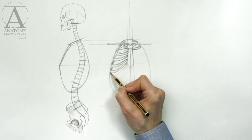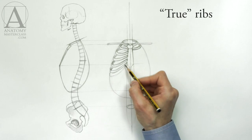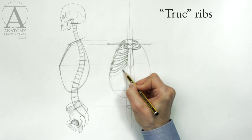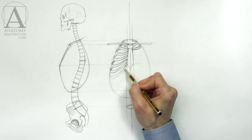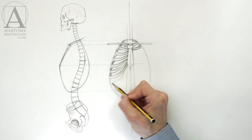The first seven pairs of ribs are called true ribs because they are connected to the breastbone. Every subsequent pair of ribs is wider than the previous one. That is why the rib cage becomes wider following an egg-shaped contour.